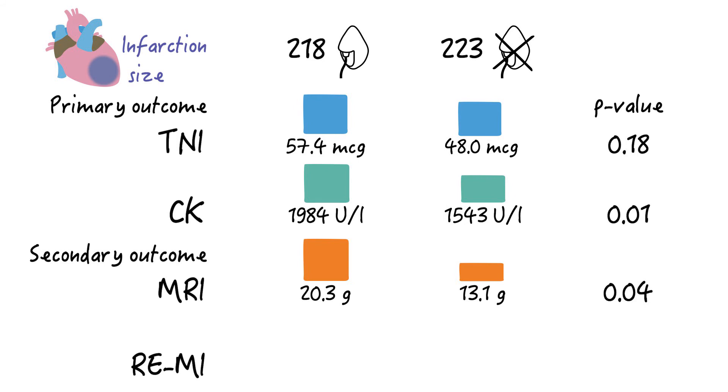And what about in-hospital re-MI? That was 5.5% in the oxygen group versus 0.9% in the room air group. P-value 0.006. So highly significant.